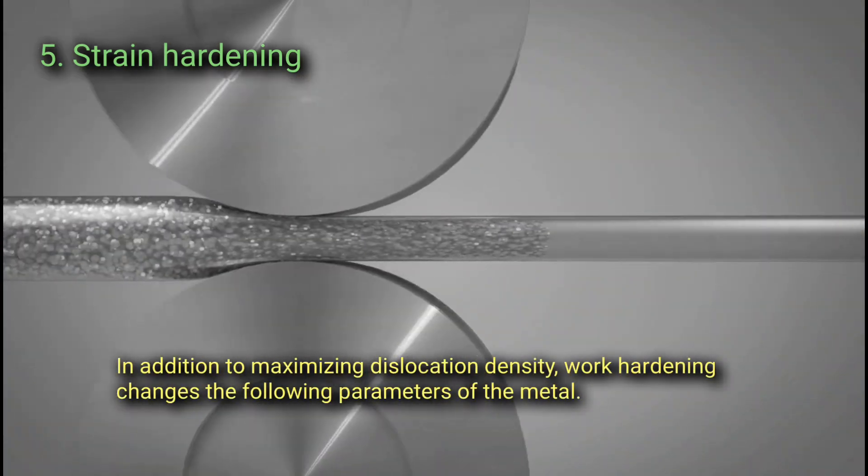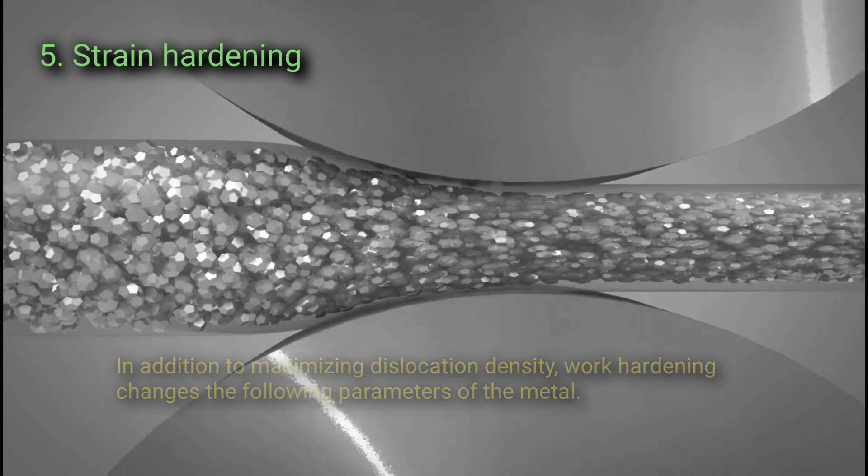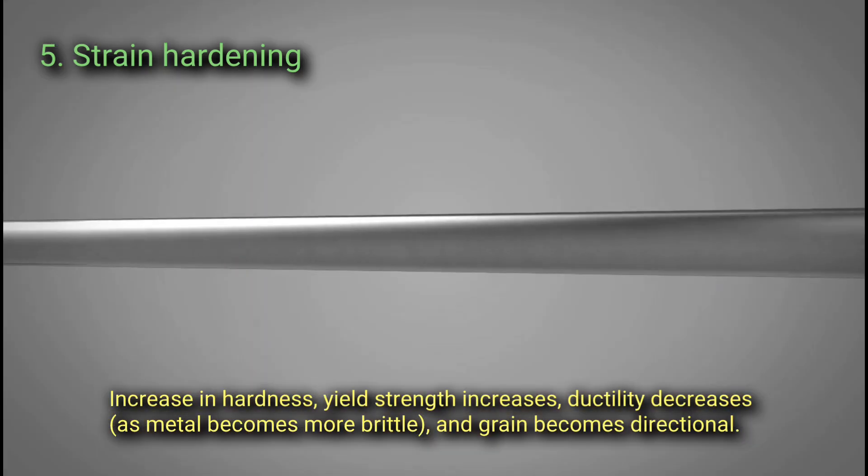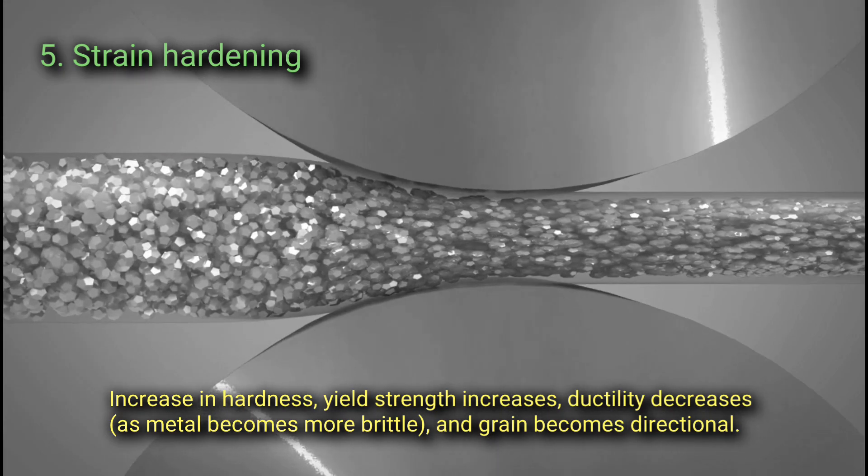In addition to maximizing dislocation density, work hardening changes the following parameters of the metal: hardness increases, yield strength increases, ductility decreases as metal becomes more brittle, and grain becomes directional.